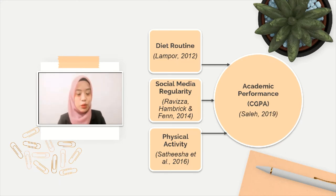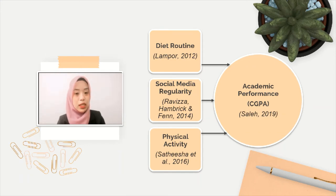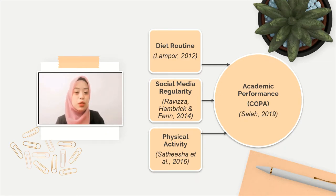The second dependent variable is social media regularity, supported by a study by Raviza, Hambrick and Fenn (2014), where they stated any use of internet, particularly social media, were negatively connected with students' learning and achievement. As for the third dependent variable, physical activity, it is supported by a research by Cetisha E.A.L. (2016), where the result indicated that physical and academic practices are proportionally linked and have a positive impact on youth education.